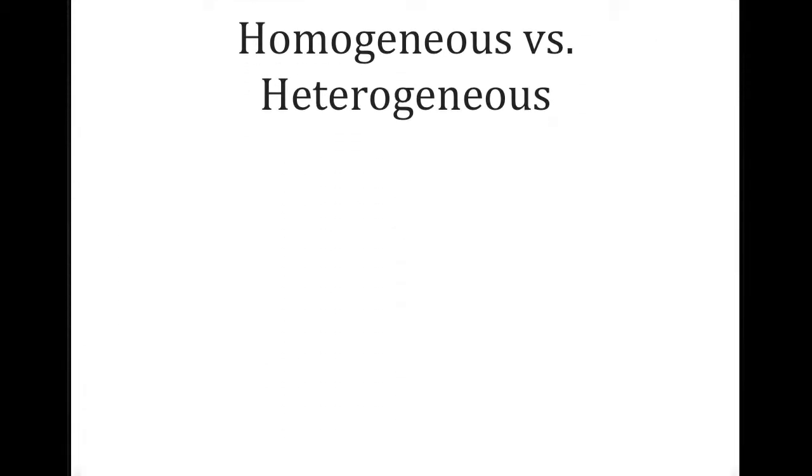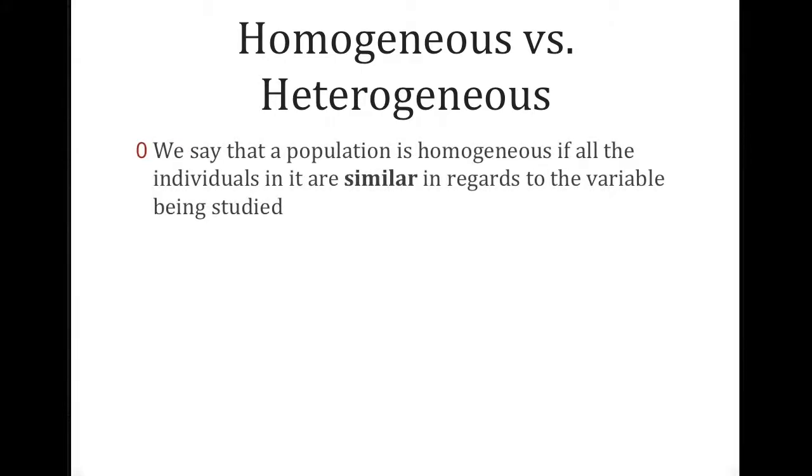We're going to talk about the difference between homogeneous versus heterogeneous, which is something that you've probably heard before. We say that a population is homogeneous if all the individuals in it are similar or the same in regards to the variable that is being studied. If they are not similar, we say that a population is heterogeneous. So examples will be coming up in this lesson.